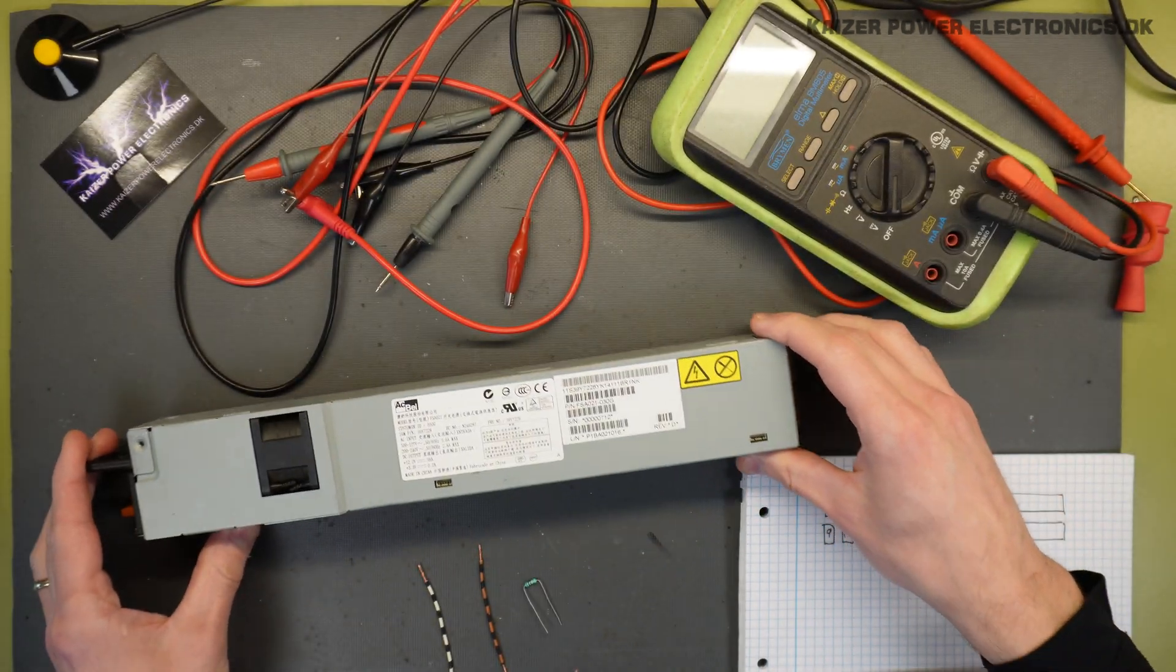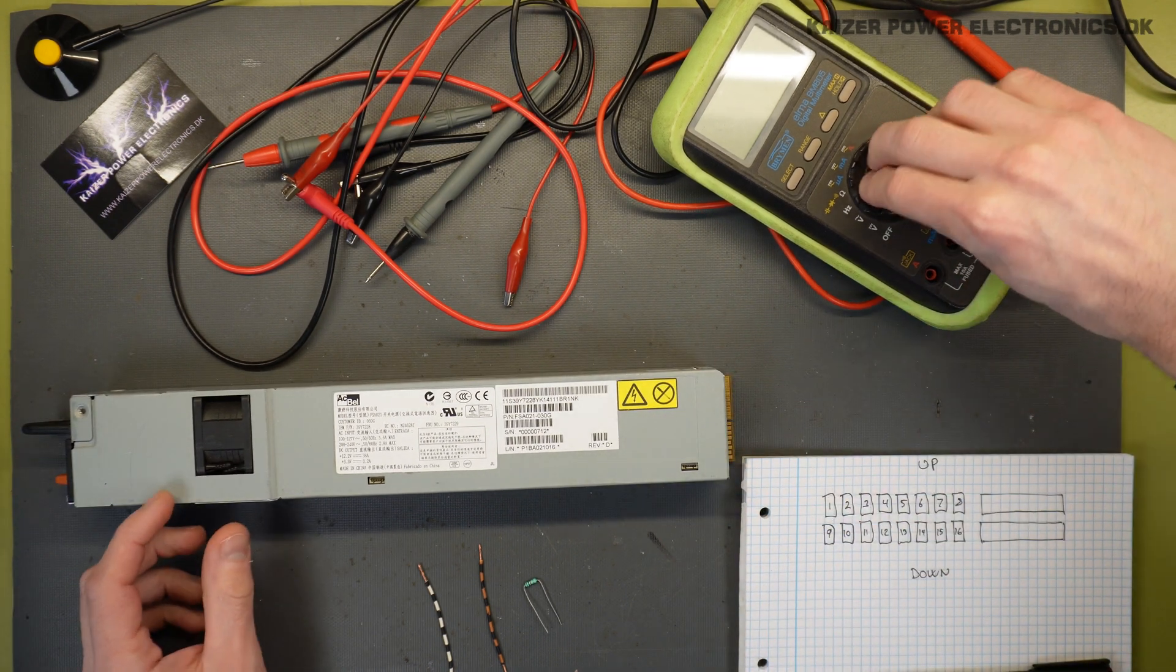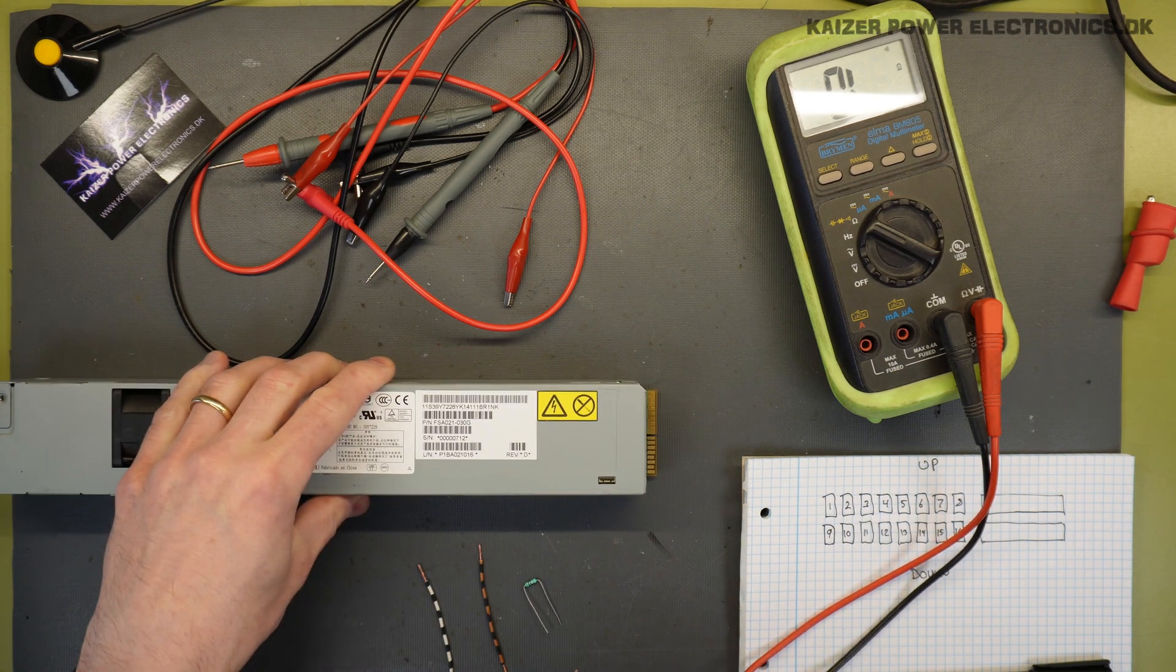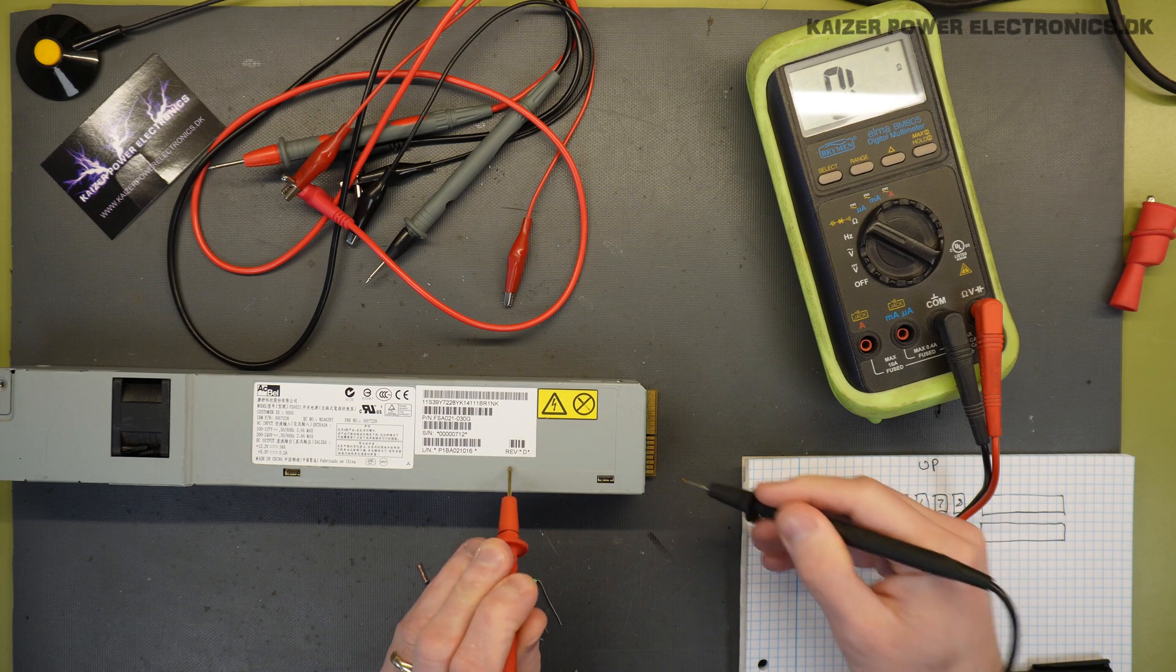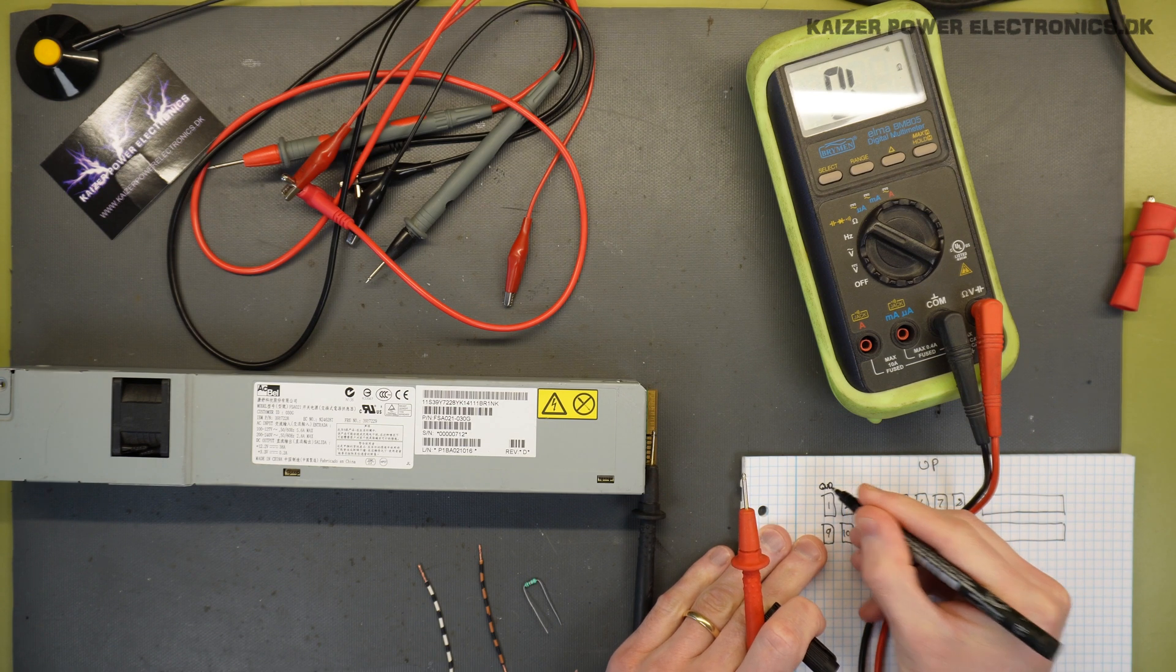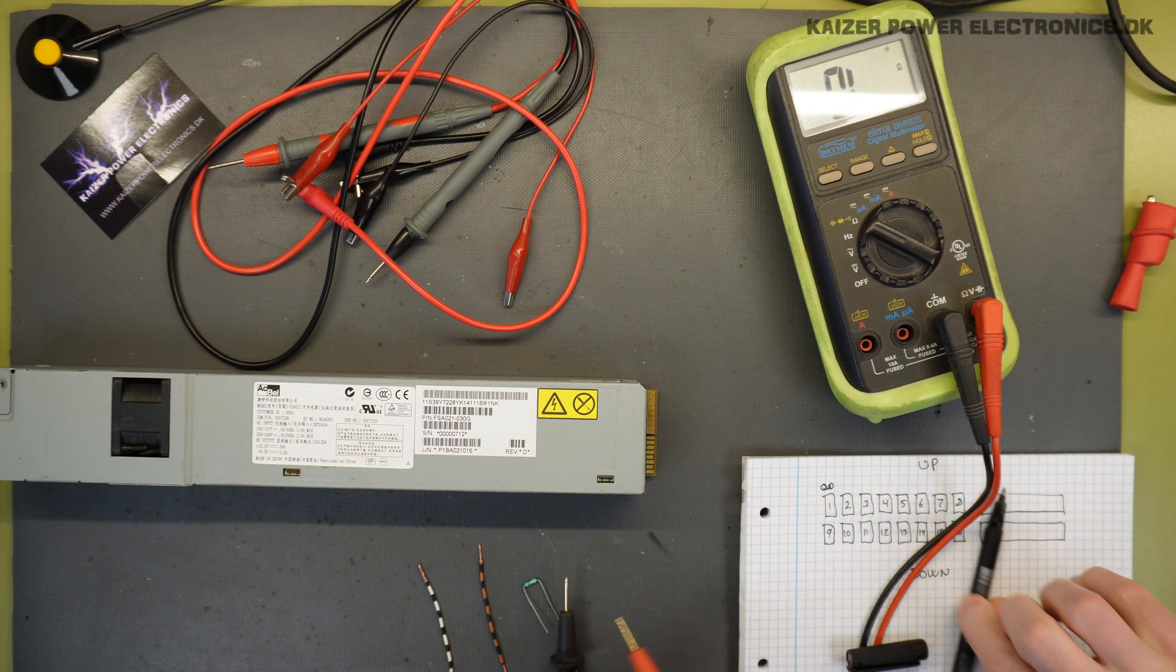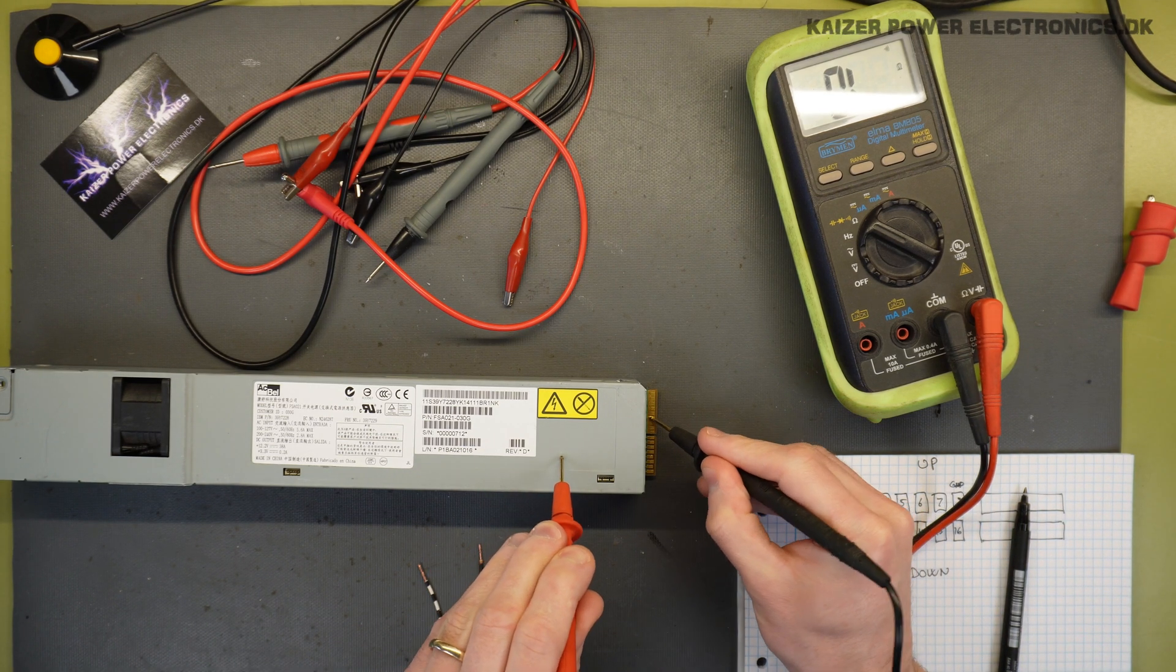So all these are chassis grounded, which means that we can identify the grounds as the first thing. For that we just use continuity on our multimeter, and we can simply just begin probing them out up against the chassis. Okay, pin one, ground. Because there is no reason to try to bridge between different grounds, and we have a ground on eight as well. And what about that one? Nothing. Then we'll try the back side.